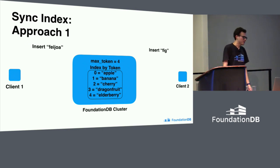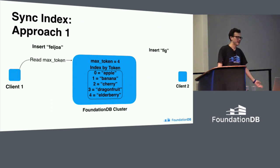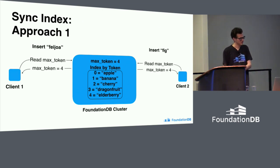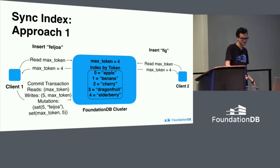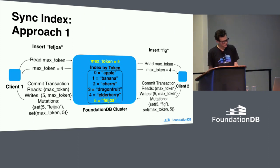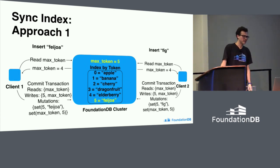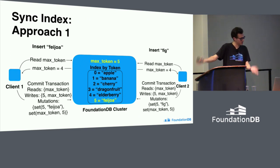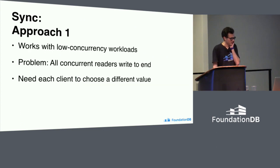But here's the problem case: two clients trying to insert at once — one inserting Feijoa, one inserting Fig. Client one reads the max token and gets back four. Client two reads the max token and also gets back four. Client one writes to key five and succeeds because it was first. Client two then tries to write to that exact same key — key five — because it's basing its key on the value of max token. The max token has changed since it began its transaction, so the resolvers will fail it.